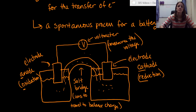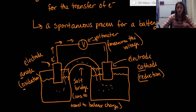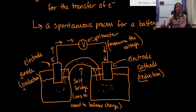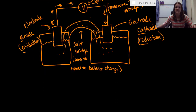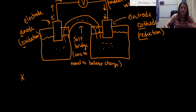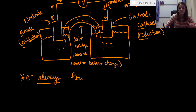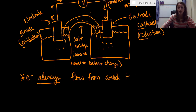This is important: electrons always flow from your anode to your cathode — always. You are never going to see electrons flow from cathode to anode. Electrons always, always flow from anode to cathode. That is a fundamental piece of a galvanic cell.